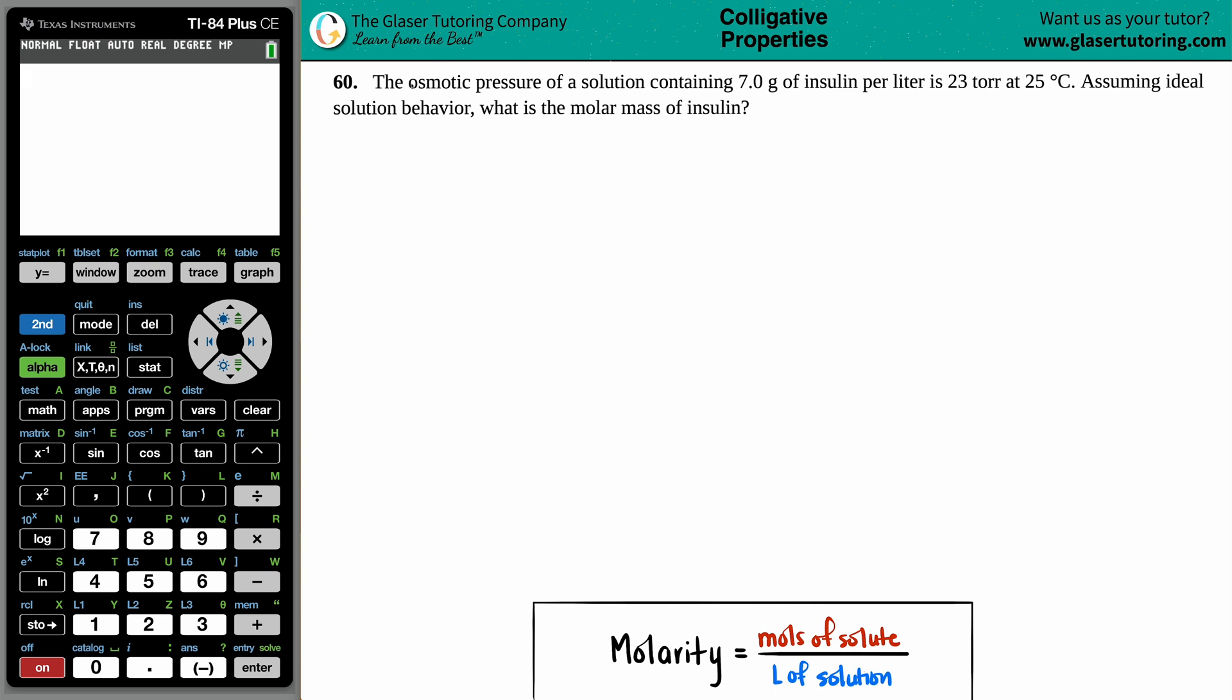Number 60. The osmotic pressure of a solution containing 7.0 grams of insulin per liter is 23 torr at 25 degrees Celsius. Assuming ideal solution behavior, what is the molar mass of the insulin?